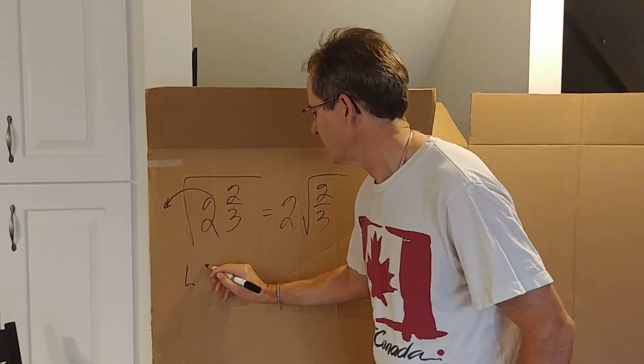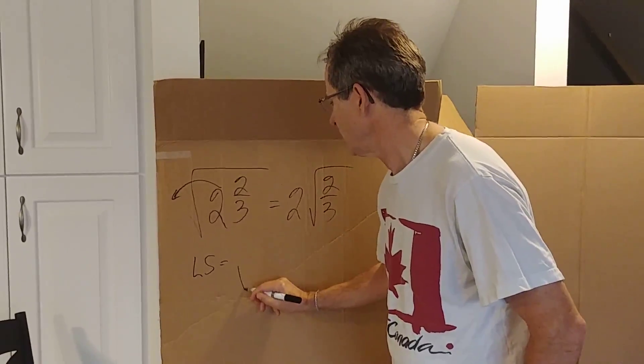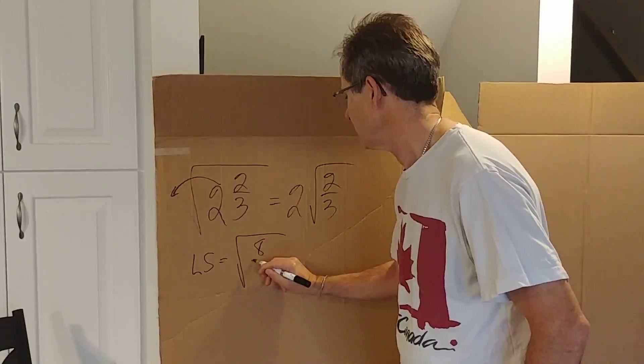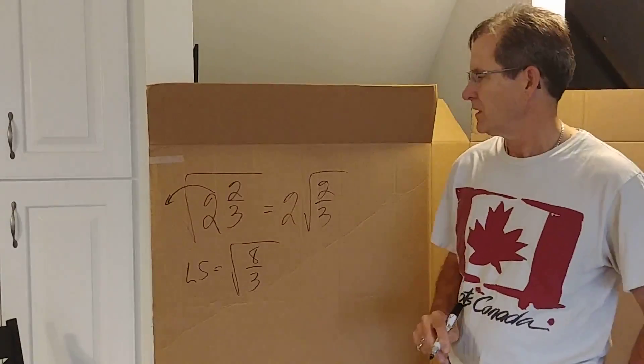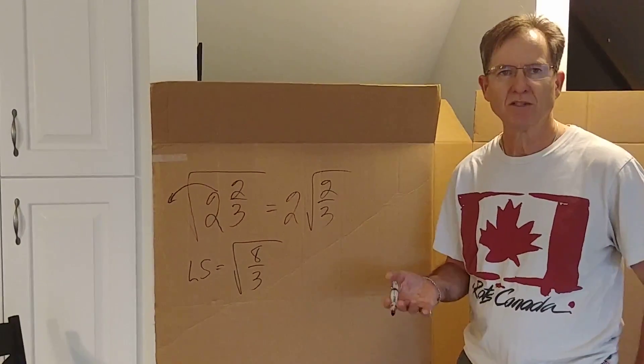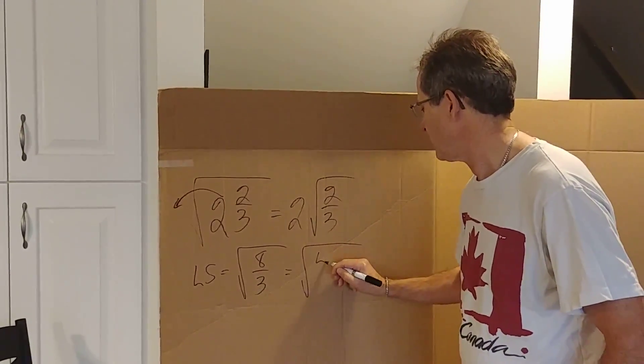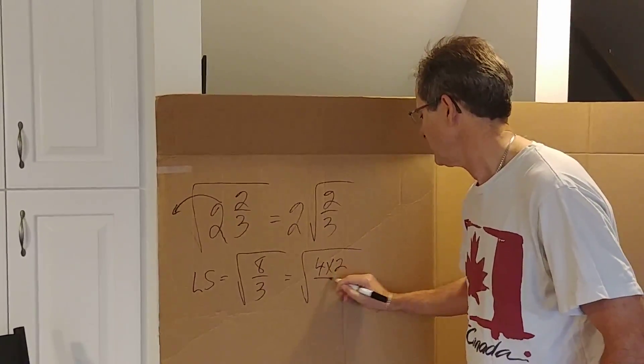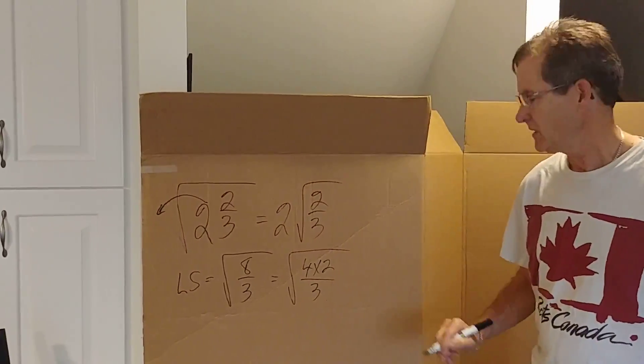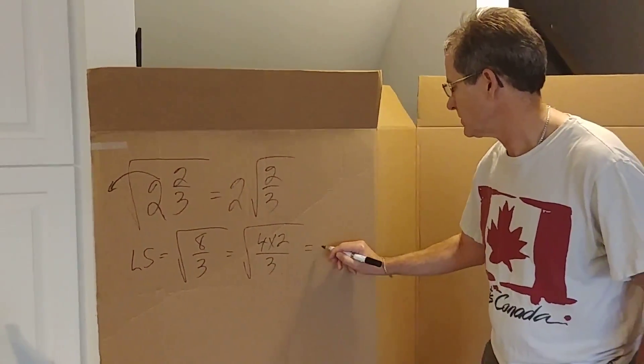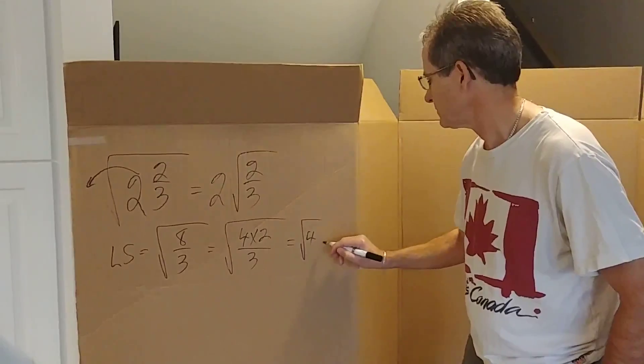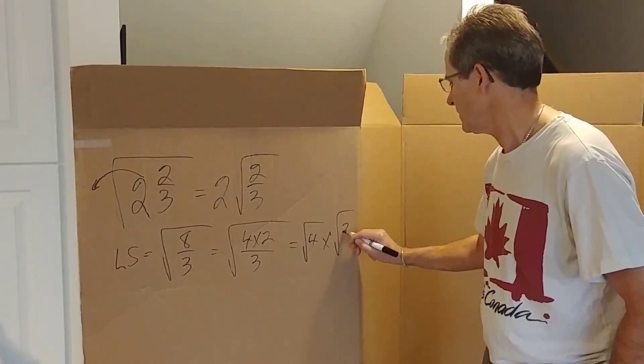So the left hand side is also the root of 8/3 because 2 wholes is 6/3 plus 2 more thirds equals 8/3. And then we can change 8 to 4 times 2, so 4 times 2/3, and that's equal to of course the root of 4 times the root of 2/3.